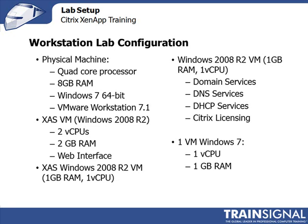Another VM I need is Windows Server 2008 R2 with about 1GB of RAM and 1 virtual CPU, running domain services, DNS, and DHCP to support certain lessons and create the domain. We're also going to install Citrix licensing on this virtual machine to consolidate roles and avoid adding yet another VM just for licensing. Finally, I'll have one virtual machine running Windows 7 with one vCPU and about 1GB of memory, acting as the client to simulate installing certain plugins or clients.